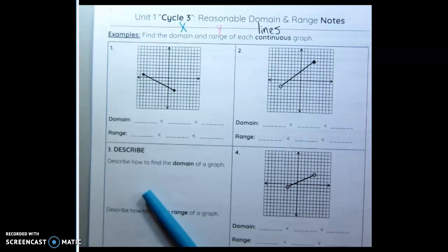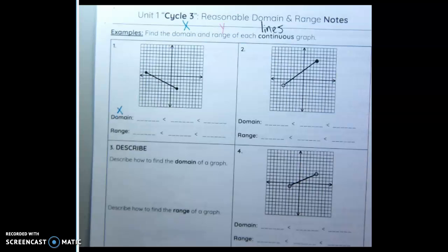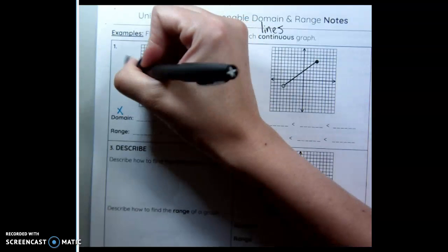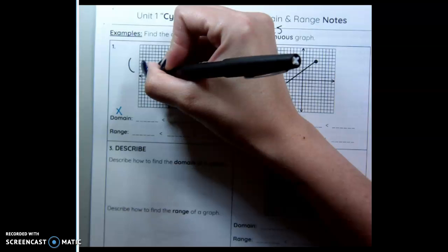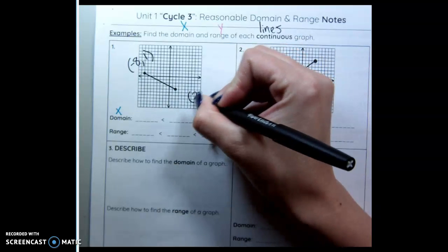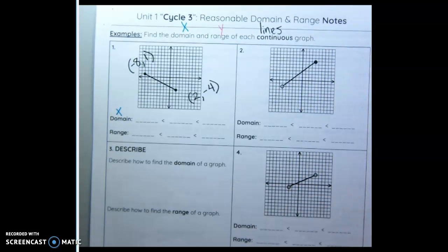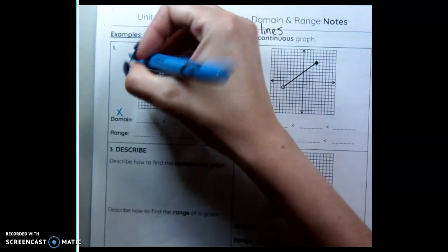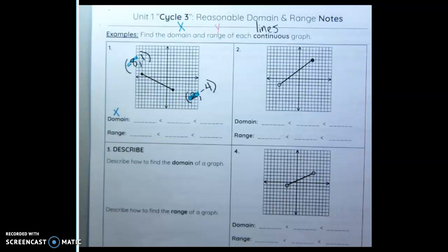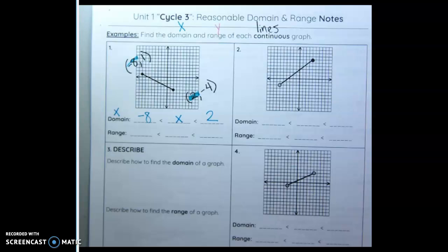So to find domain and range from a graph, the domain is how far left to how far right our x values can go. The first thing I do is I always label my points. So this is negative 8 comma 1. This point is 2 comma negative 4. Now I'm going to highlight my x values. We have negative 8 and 2. Which one is less? Negative 8. x goes in the middle. The greatest value you can have is 2.